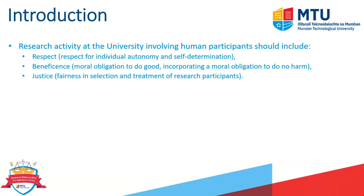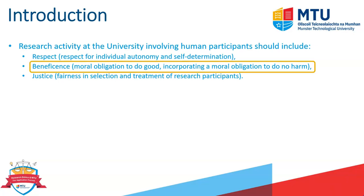I'll first start with taking an excerpt from our Human Research Ethics Policy in relation to research activity at the university involving human participants and what it should include in terms of respect, beneficence and justice. It's the beneficence I'd like to focus on, which states that a researcher should have the moral obligation to do good and the moral obligation to do no harm. This is taken from the Belmont Report, and the aspect of doing no harm very much aligns with the topic for this video presentation.